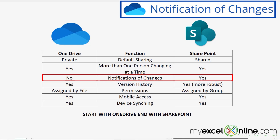The third task is notification of changes. If you have a shared file on OneDrive, you don't get a quick notification that the file has been changed. But on SharePoint, if you're sharing a team file, you do get a notification that the file has been changed. So if someone downloads a SharePoint file and works on it, you get an automatic email — whereas you don't get that inside OneDrive.